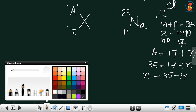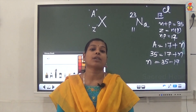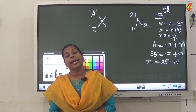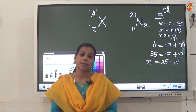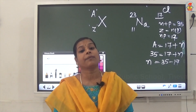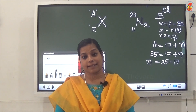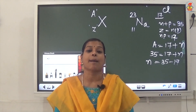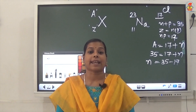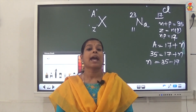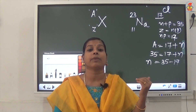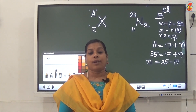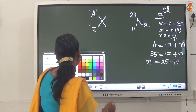So if you know the atomic number and mass number, you can find the number of protons, number of electrons, and number of neutrons. To conclude: atomic number is the number of protons in an element, also equal to the number of electrons, represented by Z. Mass number is protons plus neutrons, represented by A. Knowing both, we can represent the element.